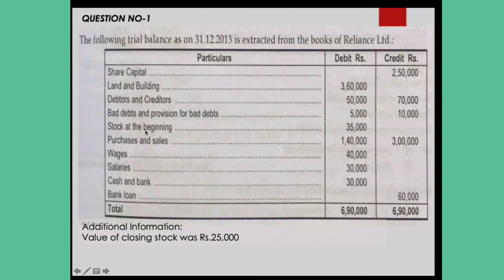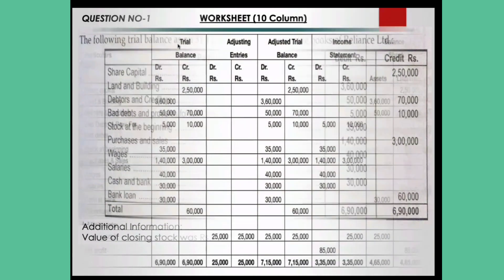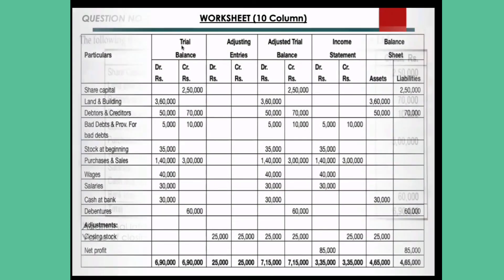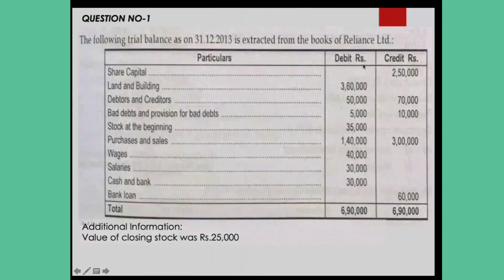Copy and paste the particulars: share capital, land and building, debtors and creditors, bad debts and provision for bad debts, stock at beginning, purchases and sales, wages, salaries, cash, bank, and bank loan. Then your amounts — copy and paste from the trial balance. On the credit side: 250, 360, 50,000, 70,000, 5,000, 10,000, 35, 1,40, 40,000, 30,000, 30,000, 60, and total 69.